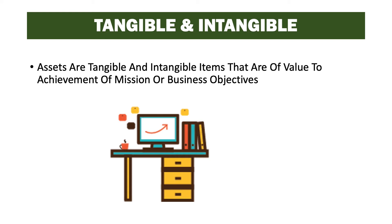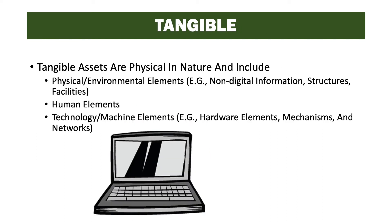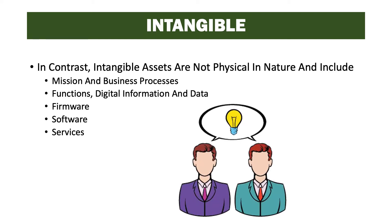Tangible assets are physical in nature and include physical and environmental elements like non-digital information, structure and facilities, human elements, technical and machine elements including hardware elements, mechanisms, and networks. In contrast, intangible assets are not physical in nature and include mission and business processes, functions, digital information and data, firmware, software, and services.